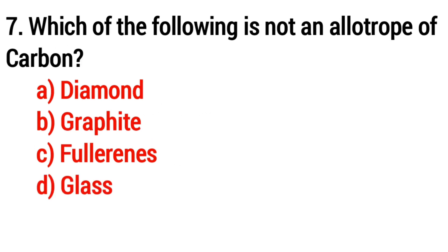Question 7: Which of the following is not an allotrope of carbon? The answer is Option D: glass.